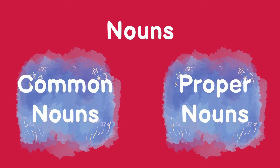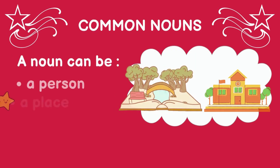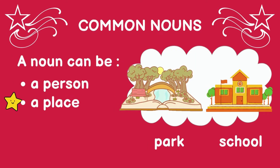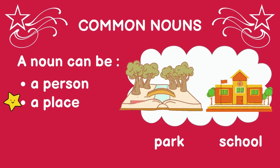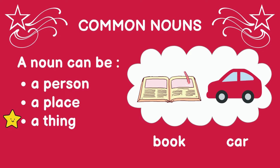There are two types of nouns: common nouns and proper nouns. Let's take a look at common nouns. A noun can be a person, for example a boy or a girl. It can also be a place, for example a park or a school. A noun can also be a thing, for example a book or a car.